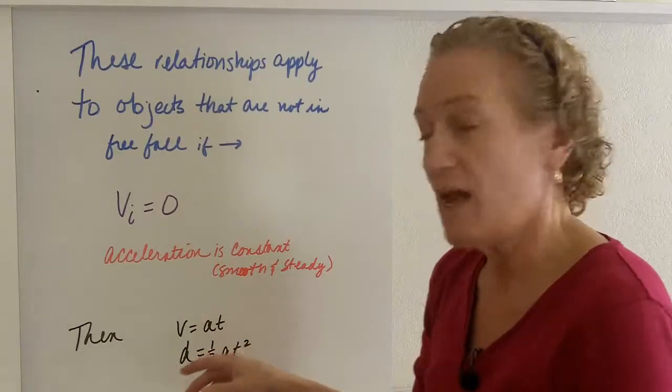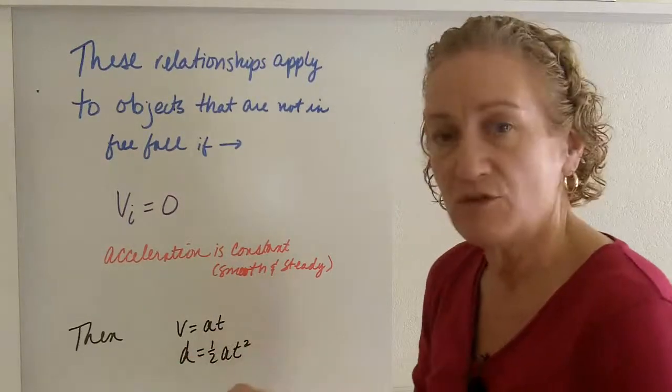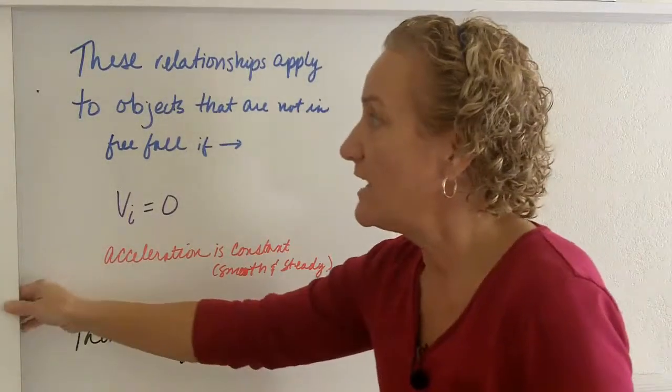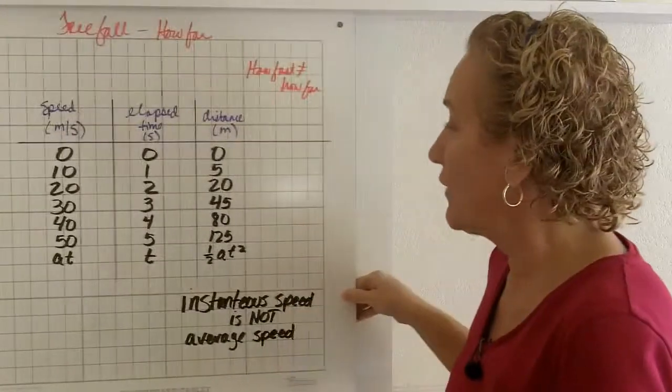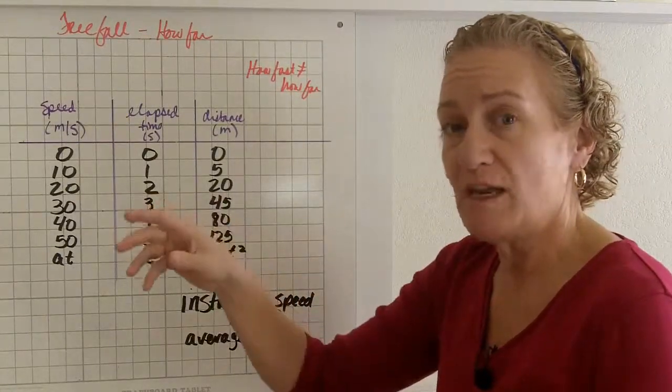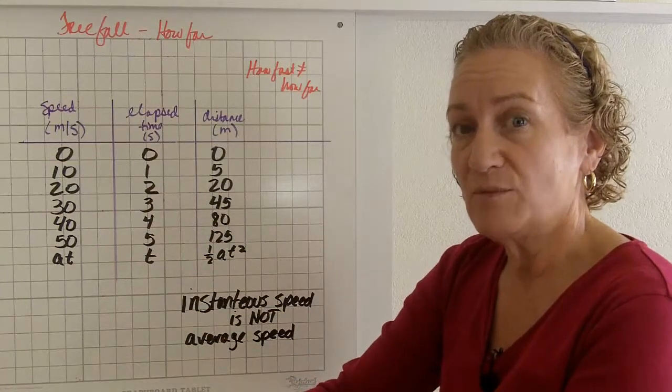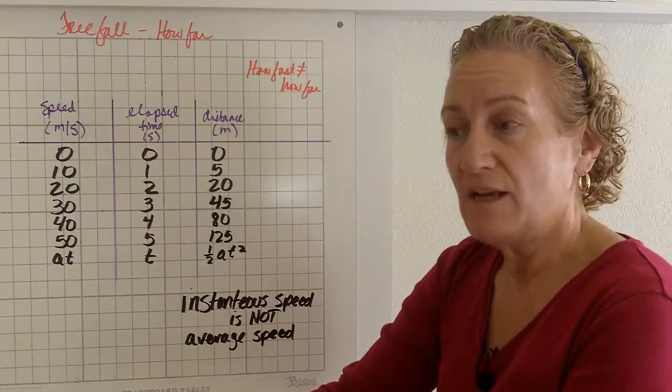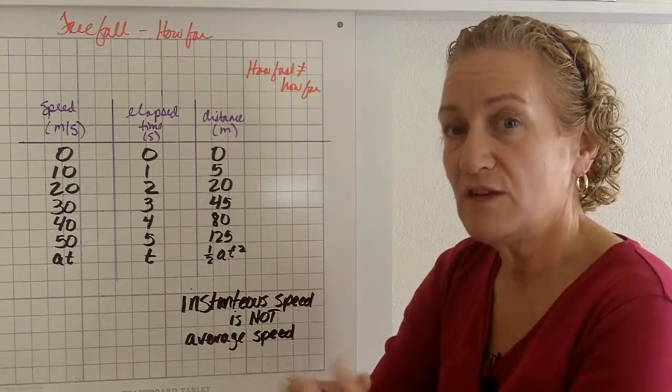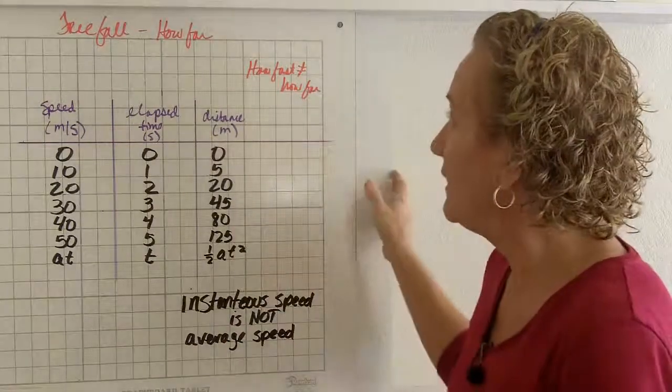Later on we're going to talk about what happens when your initial velocity is not zero. There's just one little piece that you add to these. Not too hard, but we'll talk about that later. So again, when you're trying to figure out how far something has fallen, you can use this equation. Kind of cool. So if you drop a penny in a wishing well, you can actually determine how far down the penny falls before it hits the water by knowing how long it took to hit the water. You don't even need to know the mass of the penny. That really is unimportant. So free fall, how far?